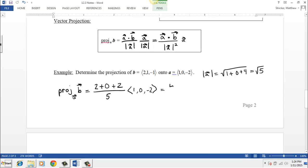Simplifying this, this is 4 fifths. That is a vector 1, 0, negative 2. Or, we could also rewrite this as 4 fifths, 0, negative 8 fifths. All right, and that is vector projections. Thank you.